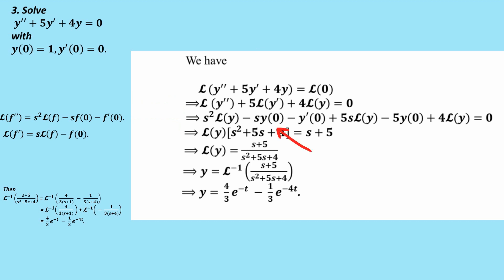So I can now replace the Laplace transform of the first and second derivatives. And I know what, for example, this term is y0. I know what y-0 is. I know this y0. So once I replace all of them with the initial conditions, I'm left with the Laplace transform of y is equal to s plus 5 divided by s squared plus 5s plus 4.